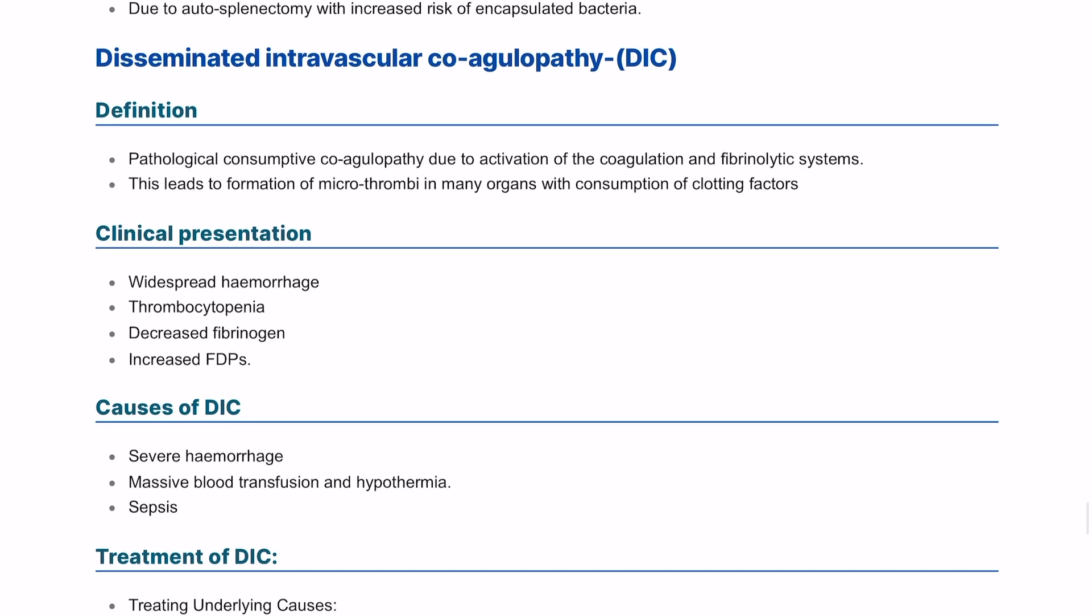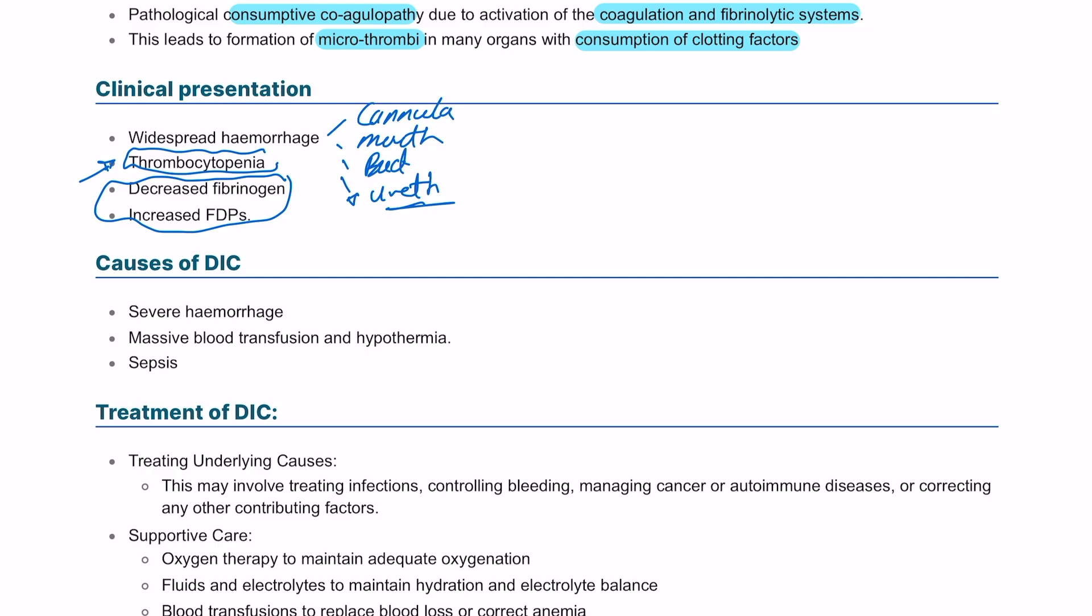The definition of DIC is a pathological consumptive coagulopathy due to activation of the coagulation and fibrinolytic systems. This leads to formation of microthrombi all over the body, in addition to consumption of coagulation factors and increasing fibrin degradation products. It's characterized by widespread hemorrhage from cannula sites, mouth, back passage or anal canal, and urethra. You will have thrombocytopenia due to consumption of platelets and coagulation factors. There will be decreased fibrinogen and increased fibrin degradation products. It's caused by severe sepsis, hemorrhage, burn, and massive blood transfusion, and treatment is mainly supportive.